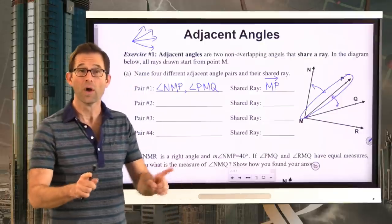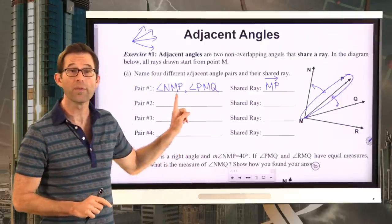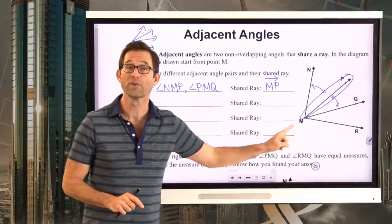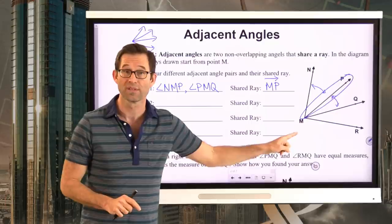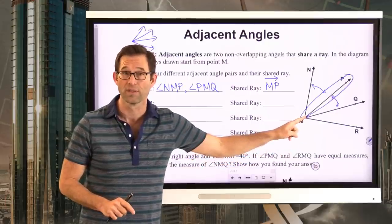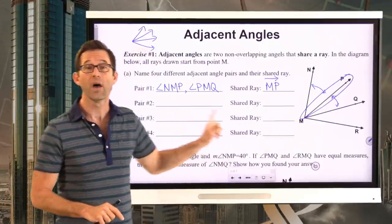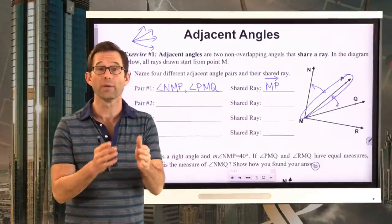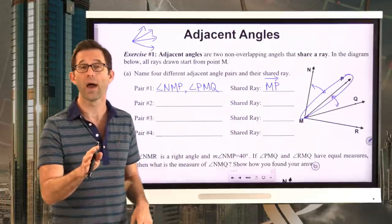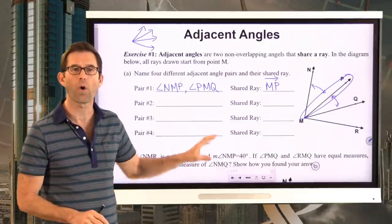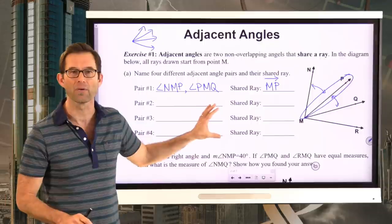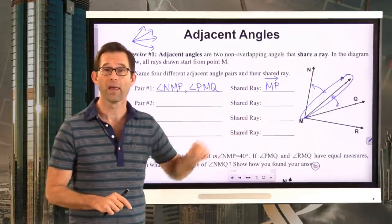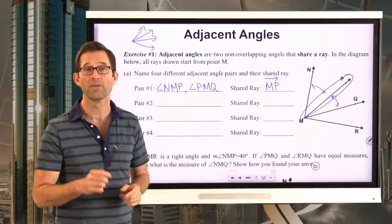With the three-letter naming system, the letter in the middle has to be the vertex — that's going to be M in every one of these problems because that's the vertex of all the angles in this picture. The other two letters simply have to come from the two rays that make up the angle. Pause the video — there are three additional pairs of adjacent angles on this diagram. Find them and name their shared ray.